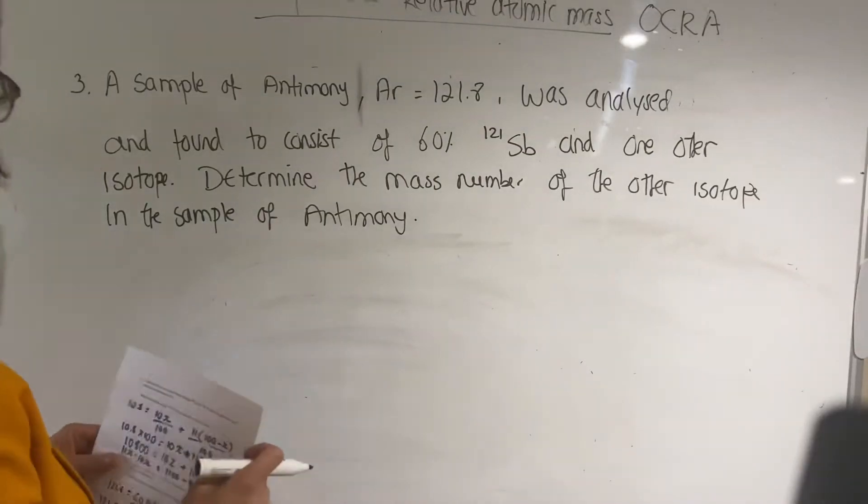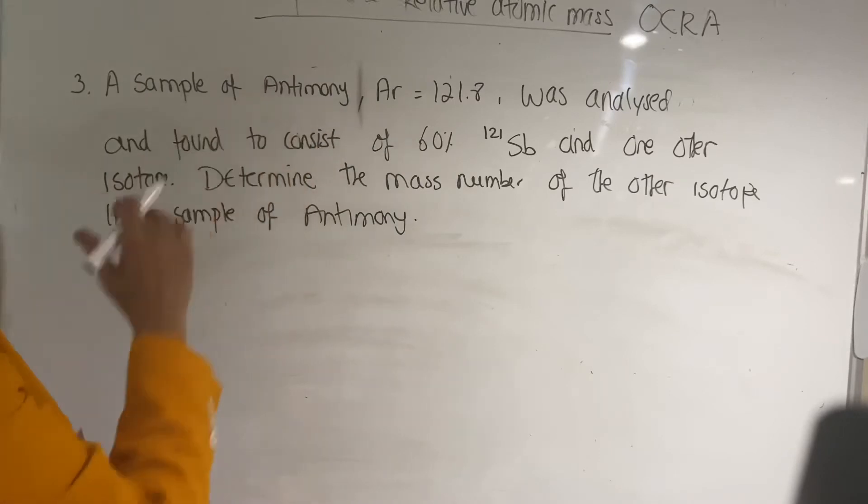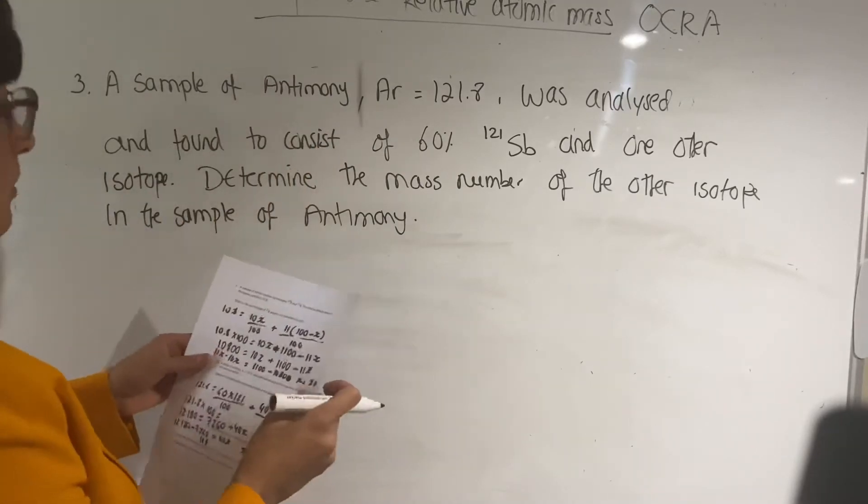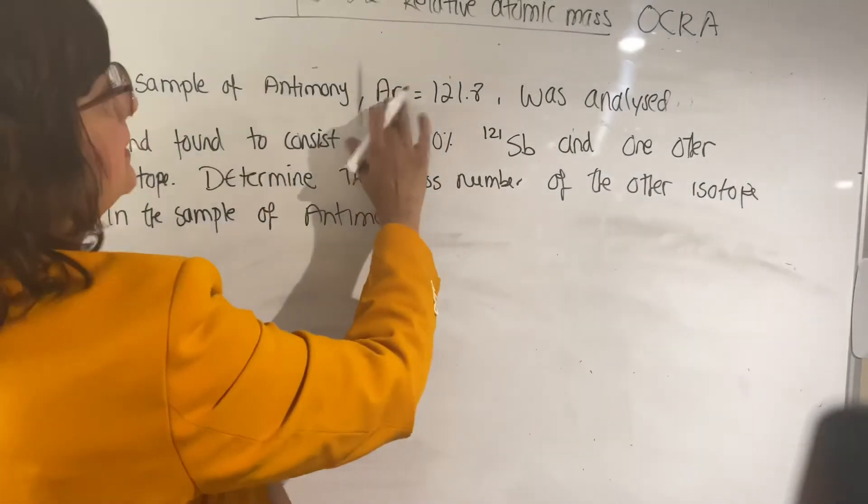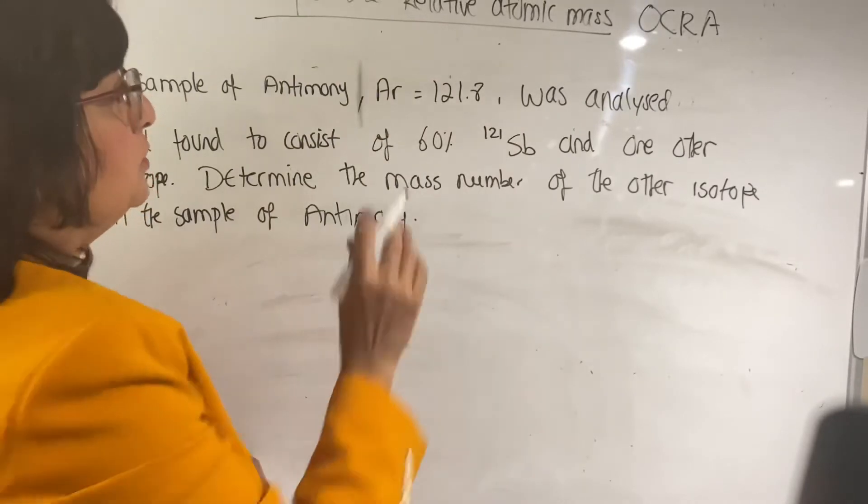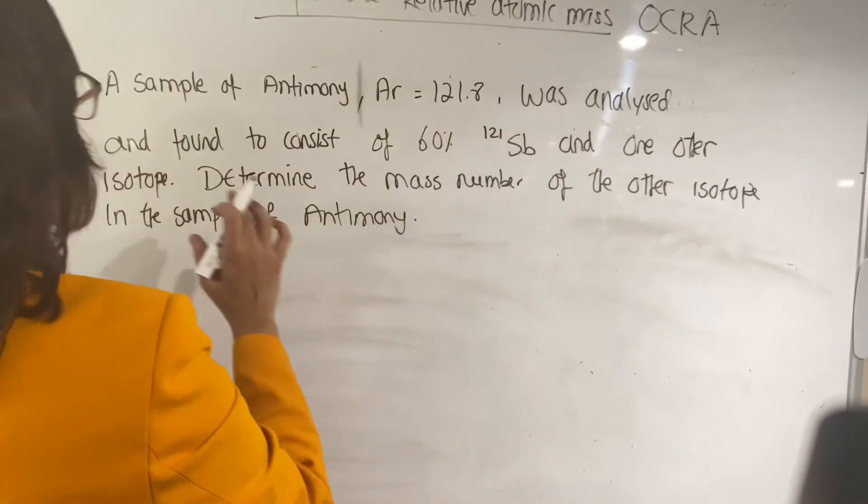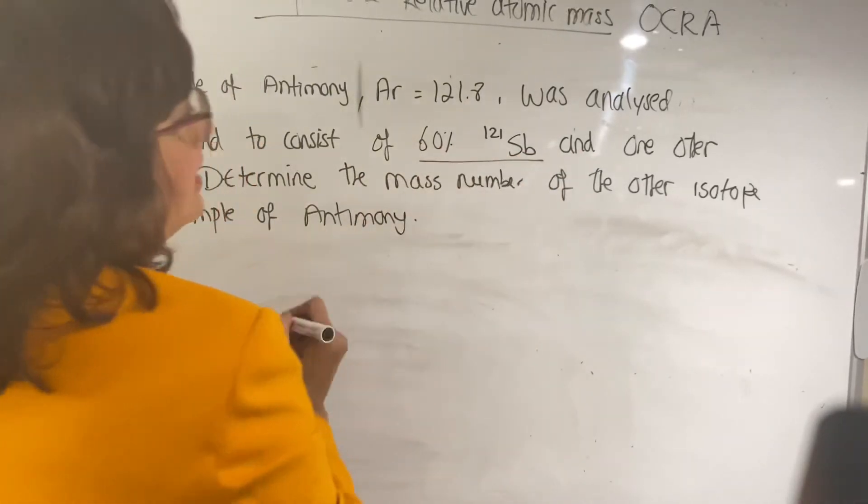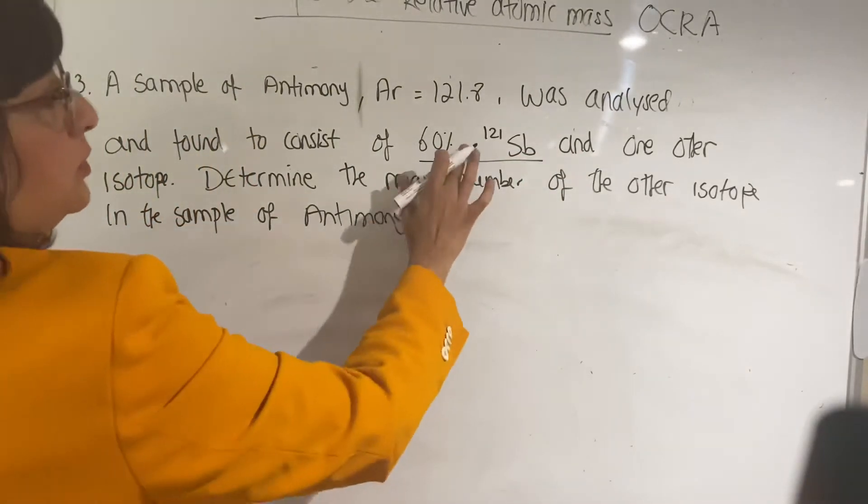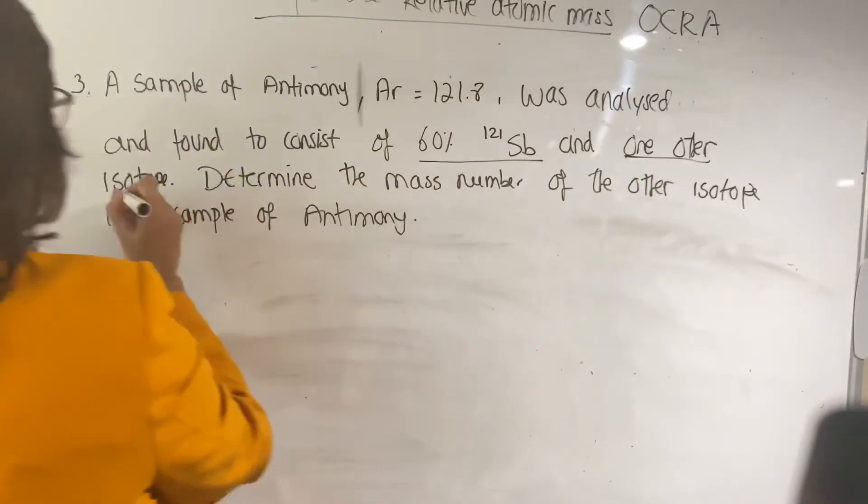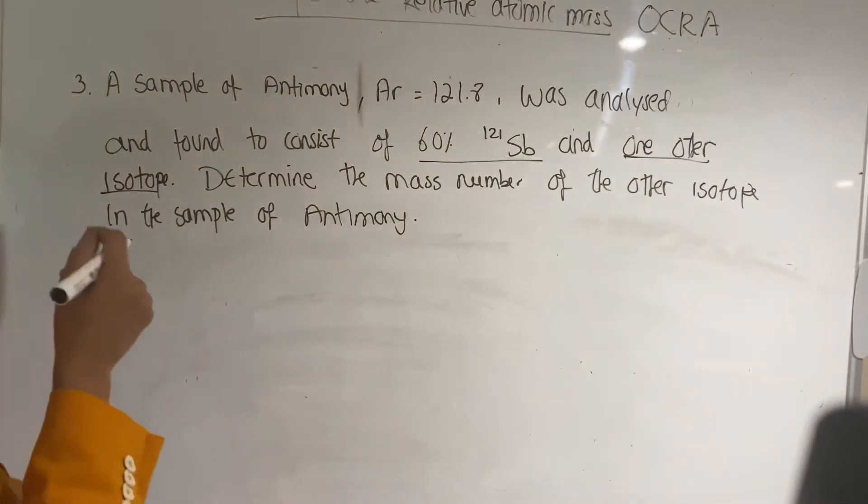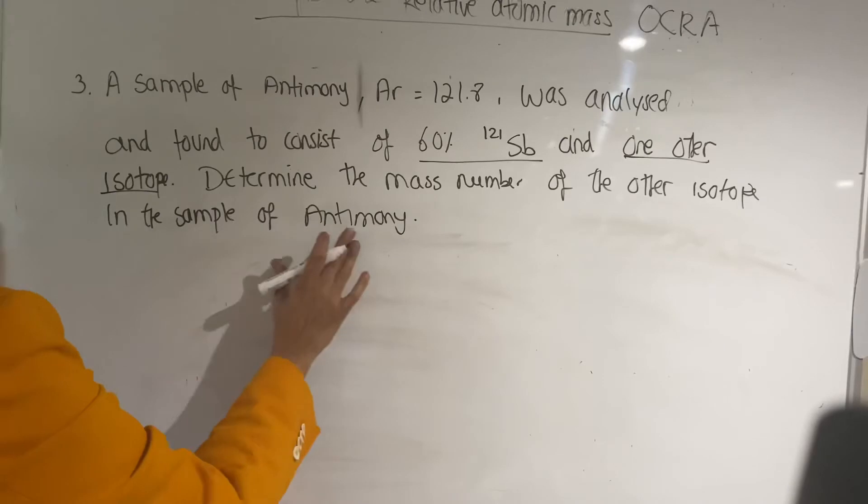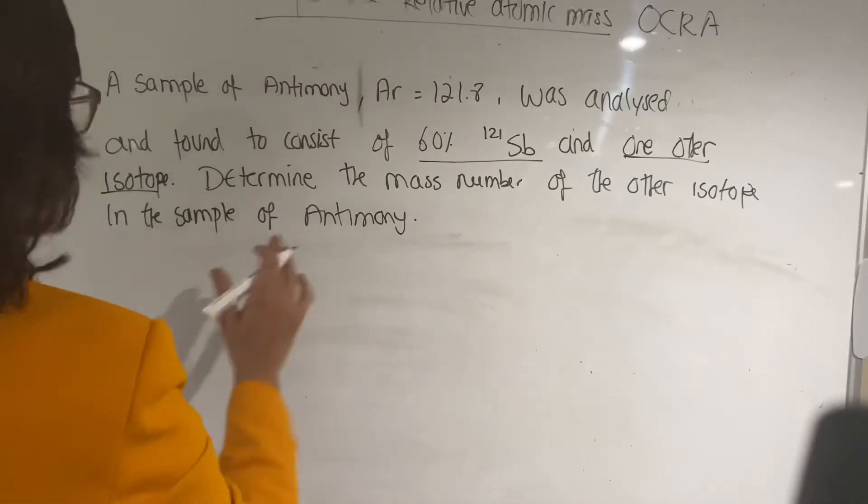Question number three: a sample of antimony with a relative atomic mass of 121.8 was analyzed and found to consist of 60% of isotope-121 antimony and one other isotope. Determine the mass number of the other isotope in a sample of antimony.